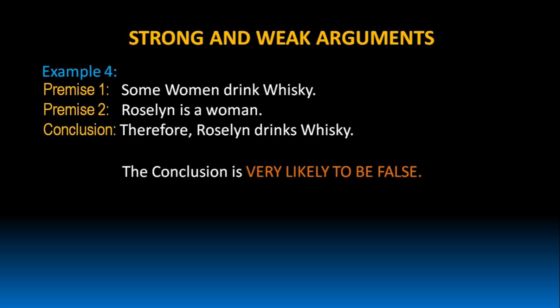The words 'some women' represent a group of women which contains very few women who drink whiskey. So there is very less probability for Rosaline to be a part of that group. That is why the conclusion is very likely to be false. Hence, this argument can be treated as a weak argument.